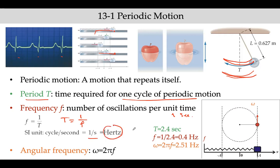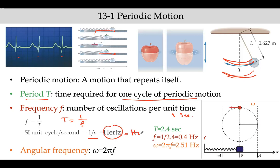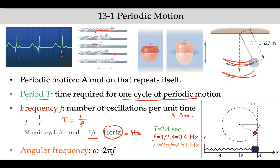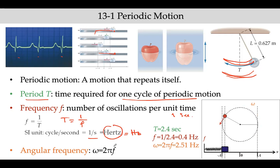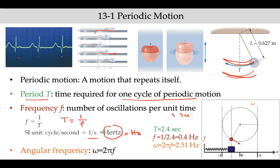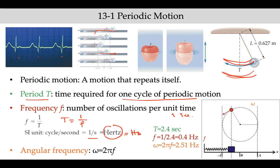We can also define angular frequency. The difference between frequency and angular frequency is just a factor of 2π — if you multiply the frequency by 2π, you get the angular frequency omega.